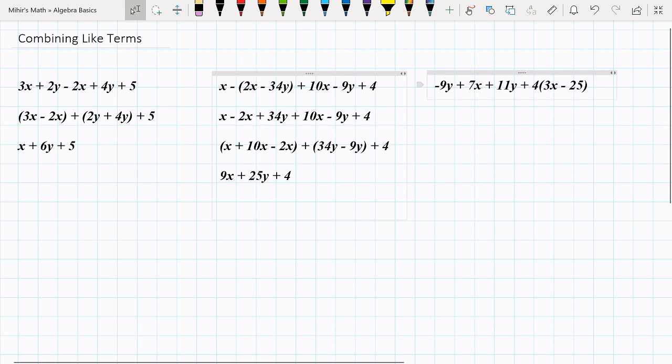So lastly, we will simplify this thing. So again, we have to open some kind of parentheses or brackets. So let's write it down here: -9y + 7x + 11y + 4(3x - 25). Just minus 25.